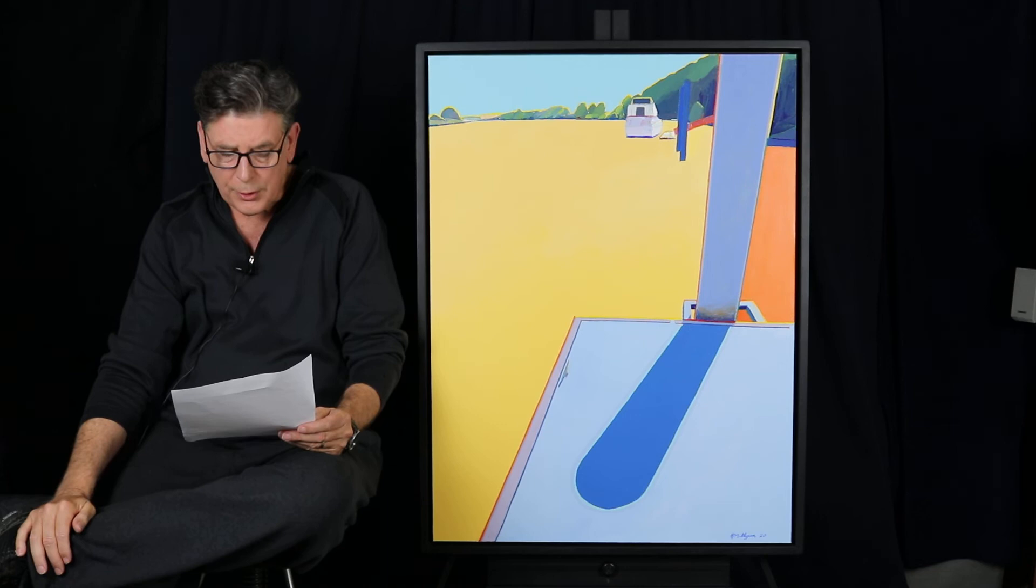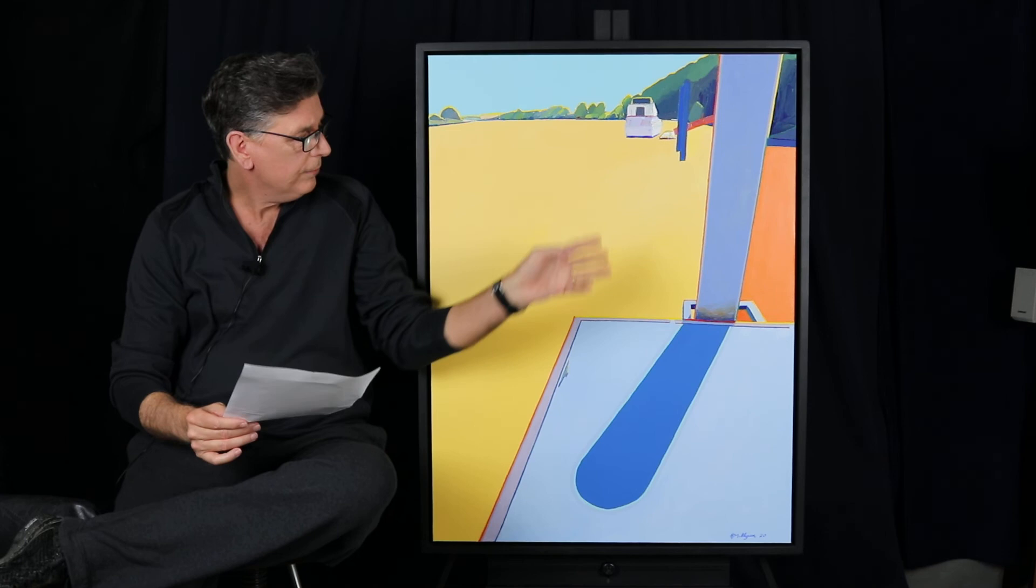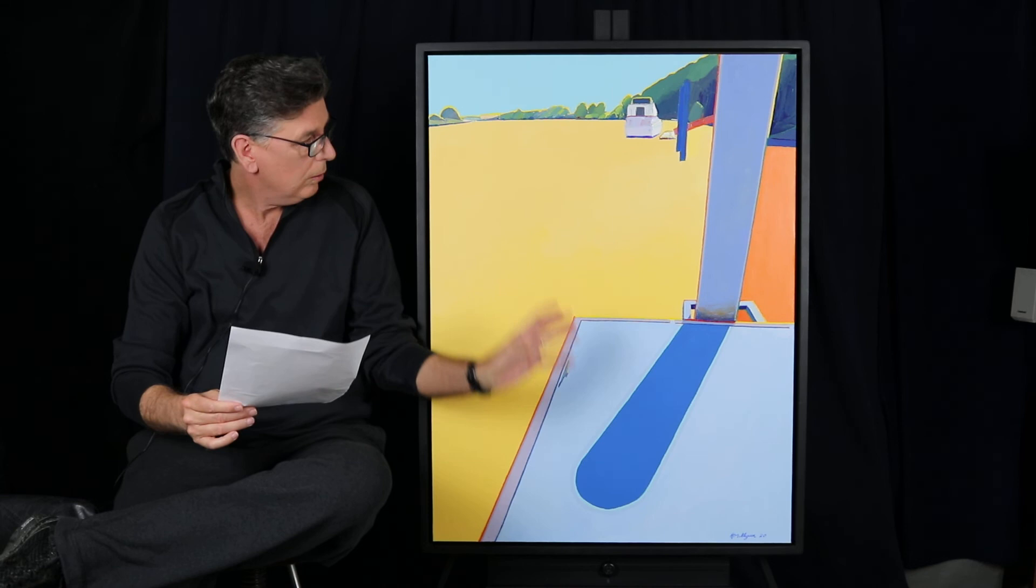Another important element of this painting is the tension created by the dock post seeming to fall to the right, but it's being held in place by the weight of this blue shadow holding it from falling.